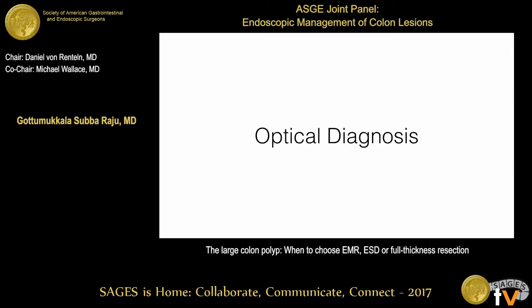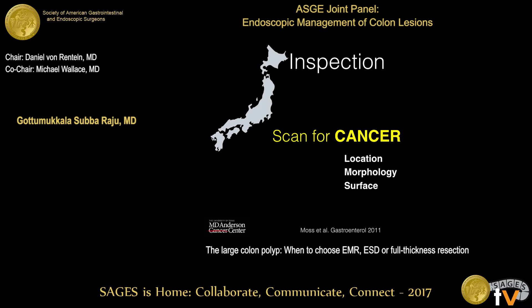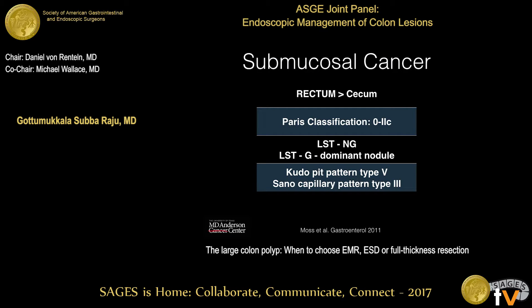If you can optically diagnose that there is no cancer, then you can resect that lesion by endoscopy. When you scan a lesion for cancer, the site, size, and shape of the lesion make a difference. A study from Australia has shown that lesions in the rectum, lesions with depressed 2C morphology, non-granular lesions, granular lesions with a large cell component, and those with a type 5 CUDO pattern are likely to harbor submucosal cancer — and those you may want to avoid resecting endoscopically.